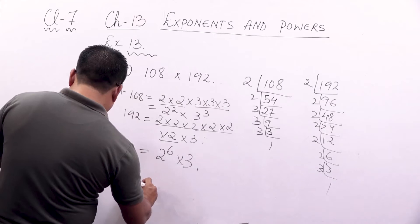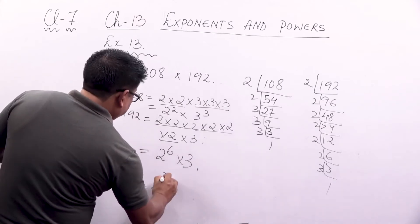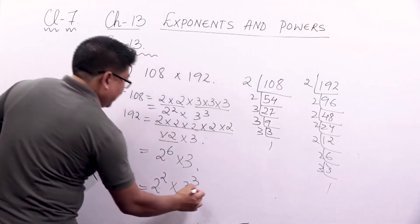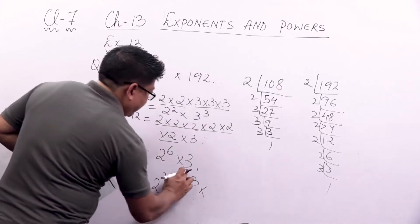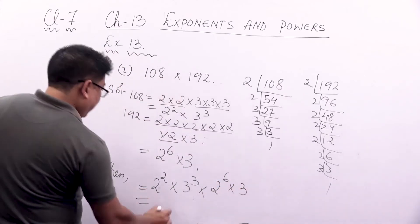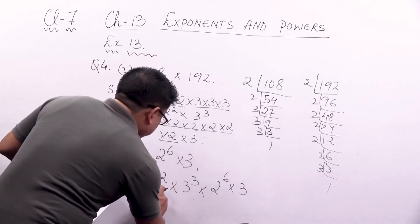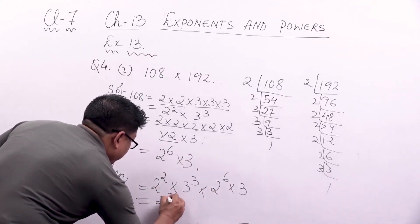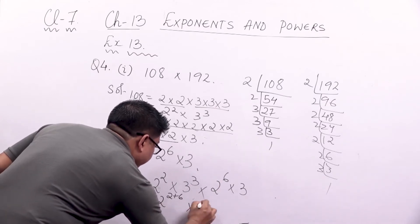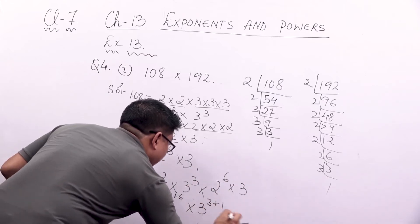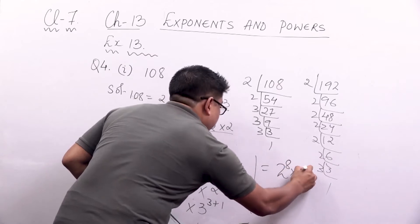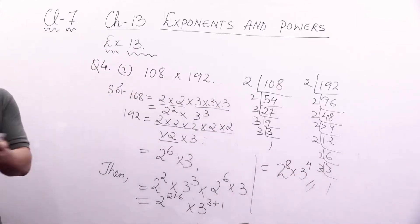So finally, 108 can be written as 2 to the power 2 into 3 to the power 3. And for 192, combining the prime factors — we have 2 with the same base, so we add the powers, giving 2 to the power 8 into 3 to the power 4. So that is your final answer. Similarly, for all other questions you will solve in the same manner.